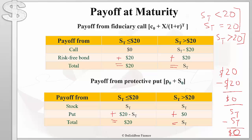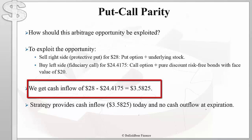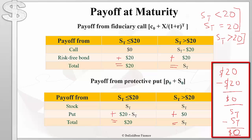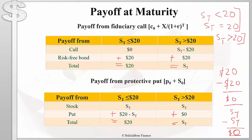Remember, when we bought the fiduciary call and sold the protective put, we received a cash inflow when we entered into the transaction. But as shown, we owe nothing when the options expire. This is an arbitrage opportunity — we are saving money upfront but owe nothing upon the expiration of the options. The reason this arbitrage opportunity arose is because the put-call parity equation was not respected: the fiduciary call portfolio was too cheap and the protective put portfolio was too expensive.